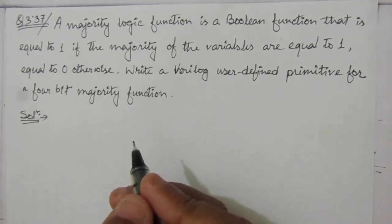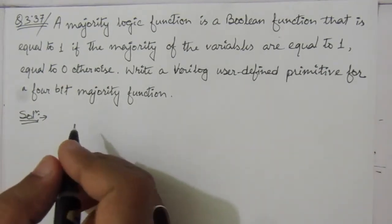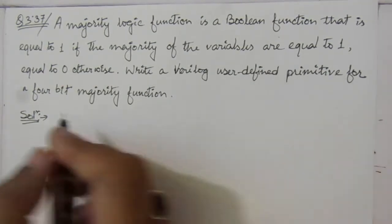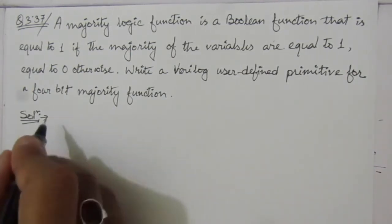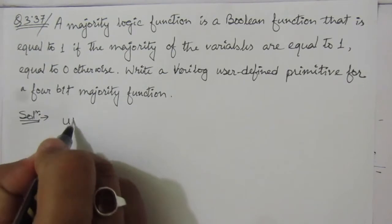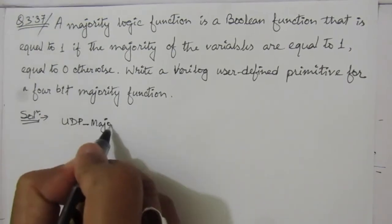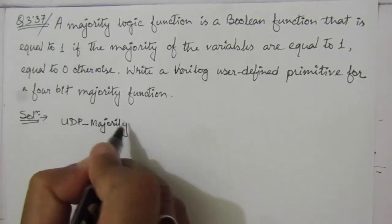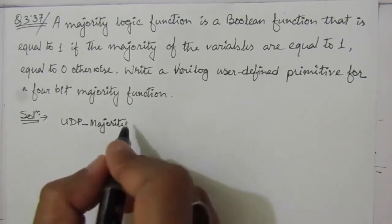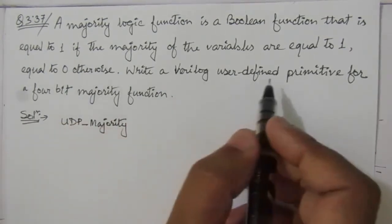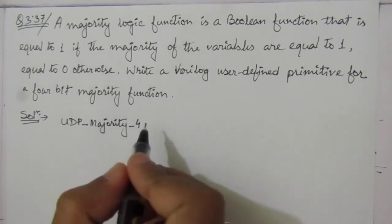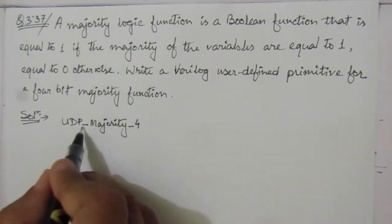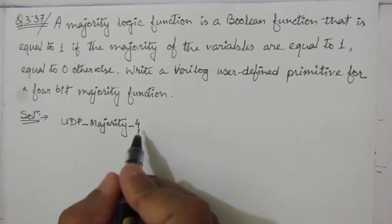So let us write the Verilog User Defined Primitive. We'll write it as UDP. Here we'll write 'UDP majority_4', defining this as a User Defined Primitive majority function of 4 bits.